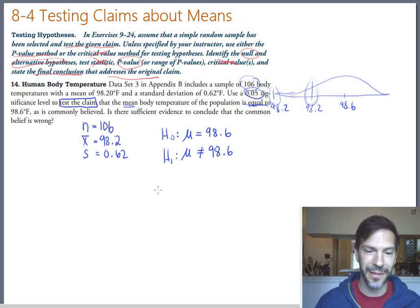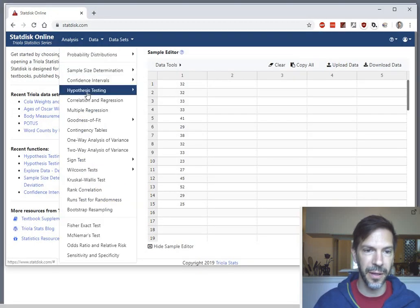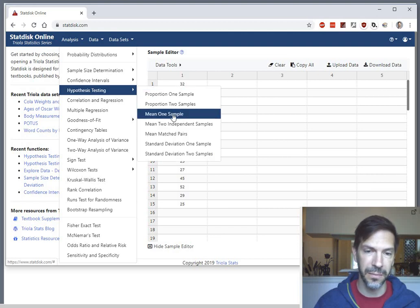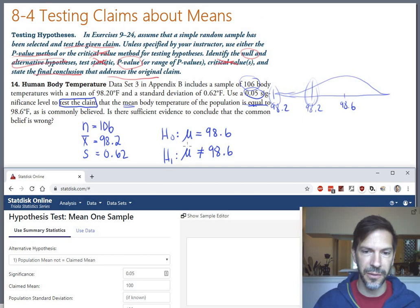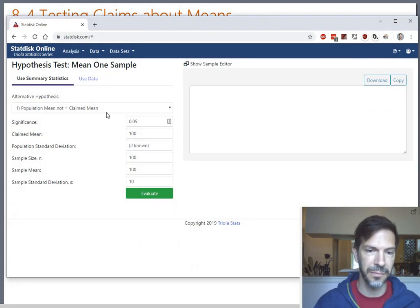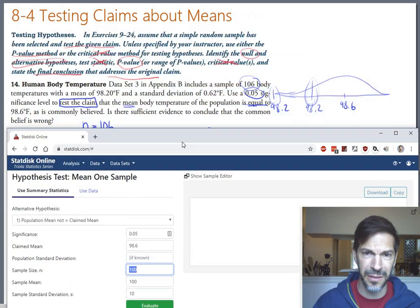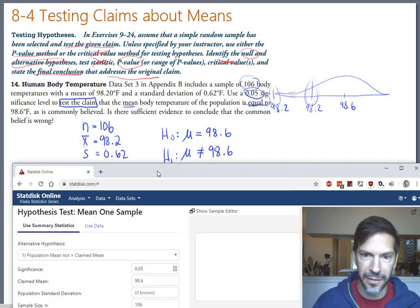We'll figure that out using the p-value, so this is time to grab technology. Get StatDisk and go under Analysis, Hypothesis Testing, and Means, Mean One Sample. Our alternative hypothesis is that the population mean is not equal to the claim. Significance level is 5%, the claim was 98.6, population standard deviation is not known, sample size was 106, sample mean was 98.2, and the sample standard deviation was 0.62.